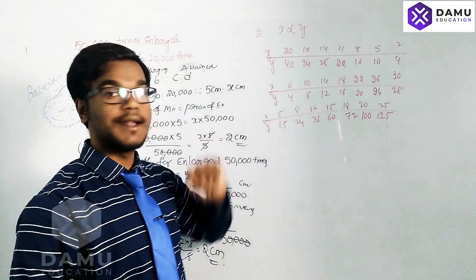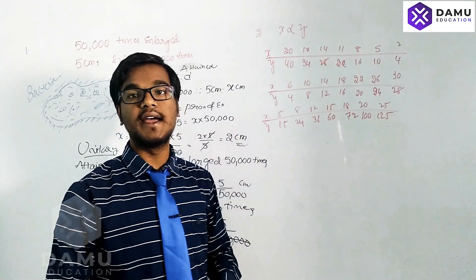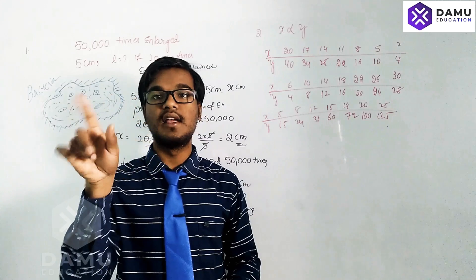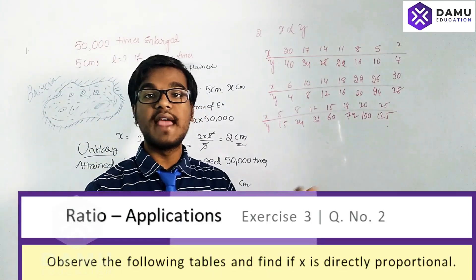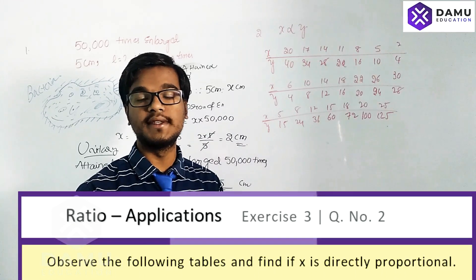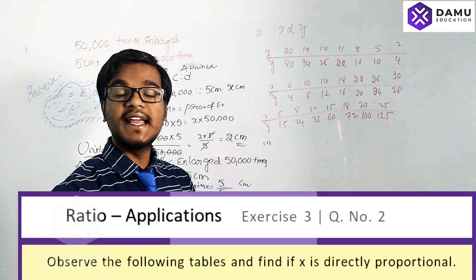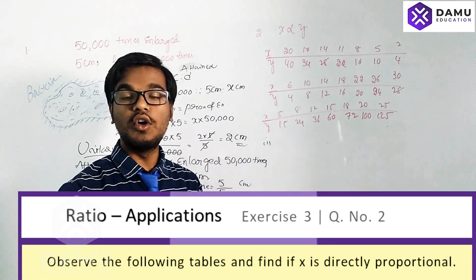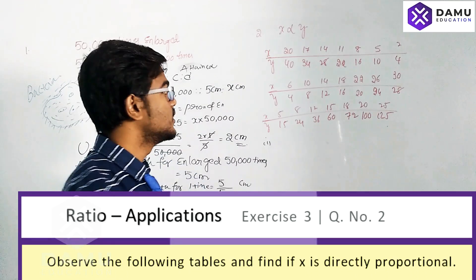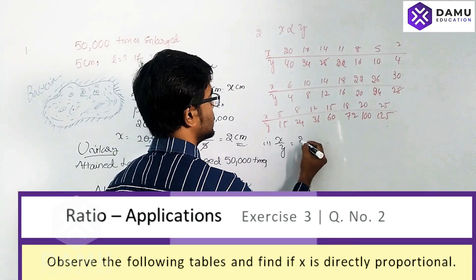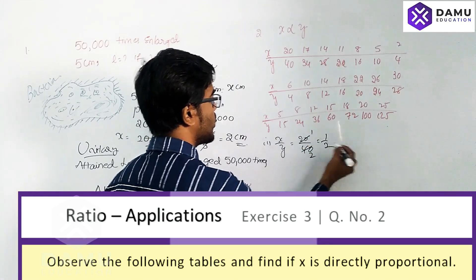Our next question: we have to check whether x is proportional to y. The symbol used here is the proportional symbol — in higher classes, we use alpha. We check whether the ratio is correct. We find the ratios for all the values: x divided by y, starting with 20 divided by 40.